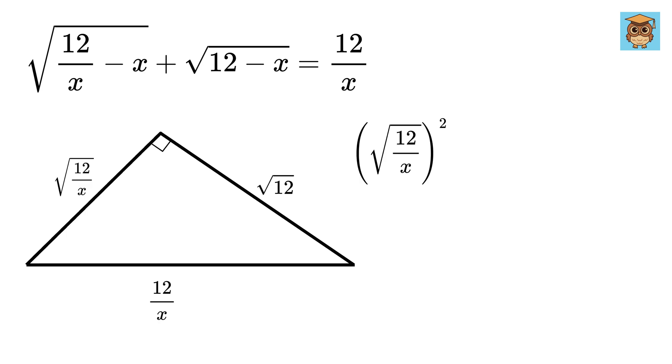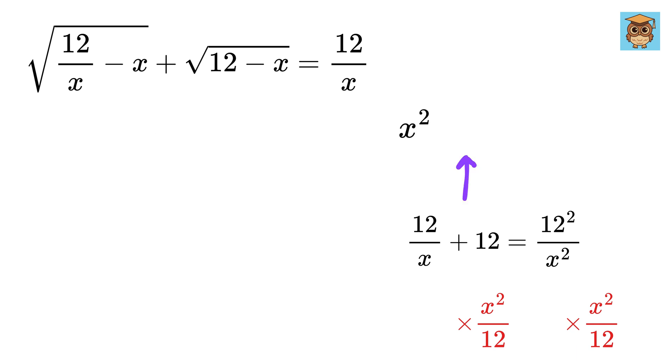So, root 12 over x whole square plus root 12 square equals 12 over x whole square. This becomes 12 over x plus 12 equals 12 square over x square. Divide both sides by 12 and multiply by x square to get x square plus x equals 12.